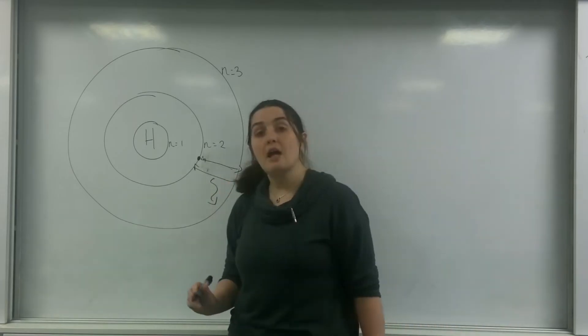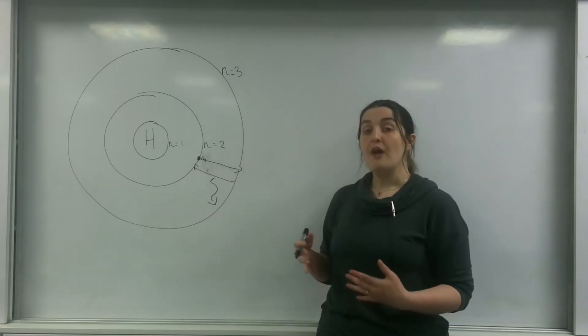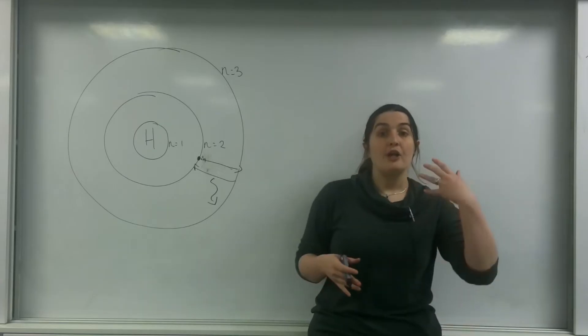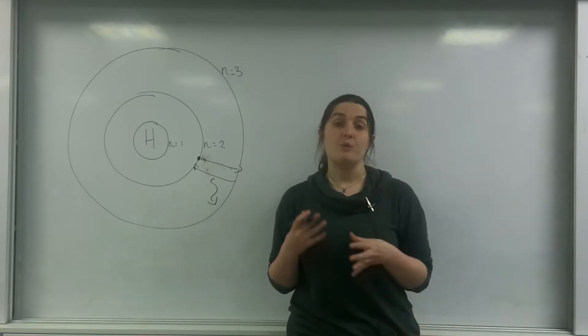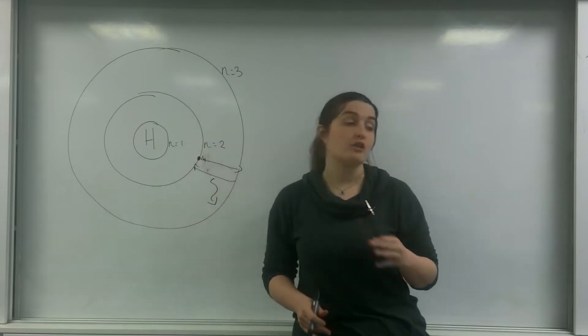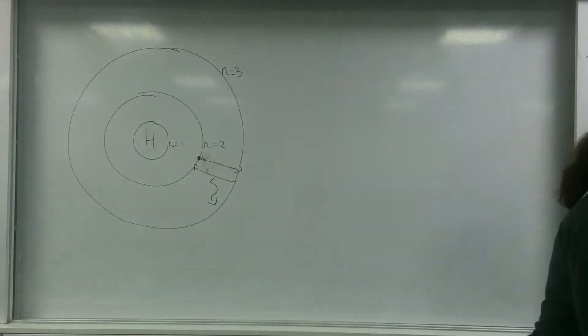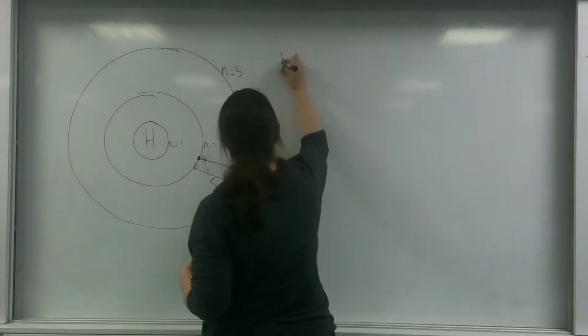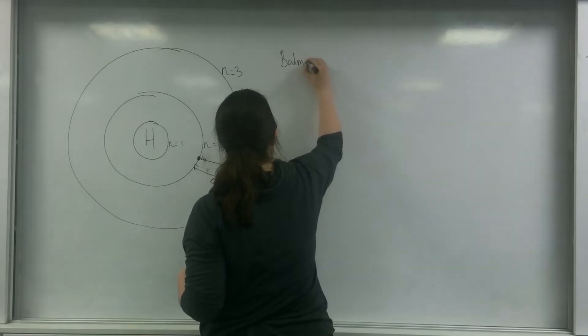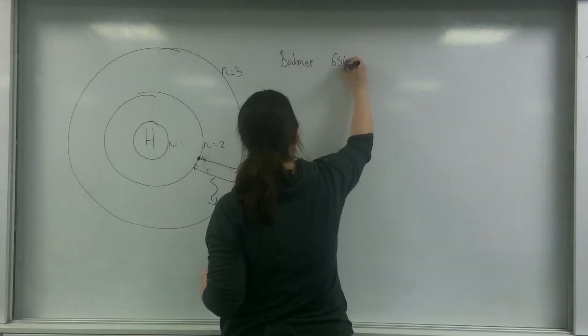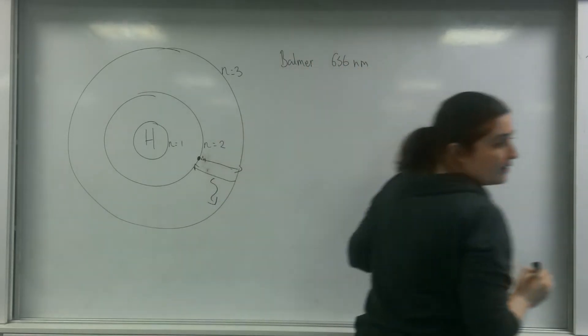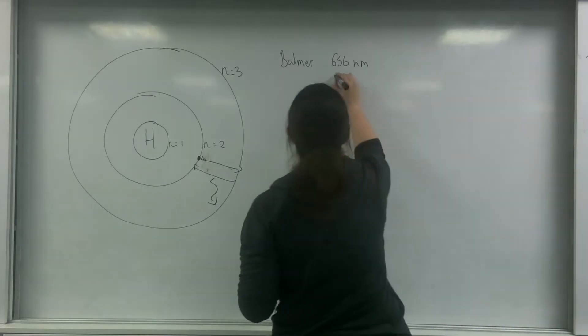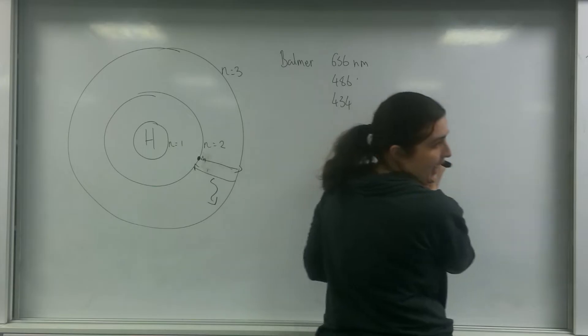By starting at n equals 2, there are a specific number of wavelengths that n equals 2, this Balmer line, corresponds to. These would be 656 nanometers, 486, 434, and 410.